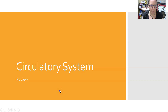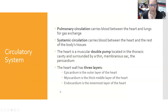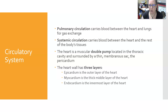A quick review of the circulatory system: the pulmonary circulation carries blood between the heart and the lungs for gas exchange, and the systemic circulation carries blood between the heart and the rest of the body's tissues. That's how it delivers the oxygen picked up in the lungs to the tissues, allowing us to produce energy and remove carbon dioxide as waste.